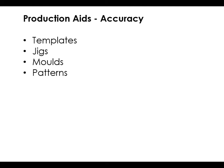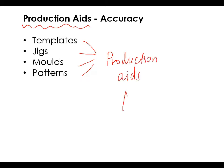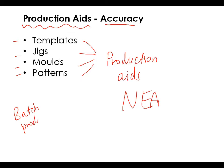Hi everyone, today we're going to talk about these things called production aids. I've seen them come up in the exam a good few times and I'm guaranteeing you straight away that all of you will have most likely used one of these types of production aids in your NEA. Production aids are most useful in batch production when you are making sets of say 50 to a thousand of a particular product.